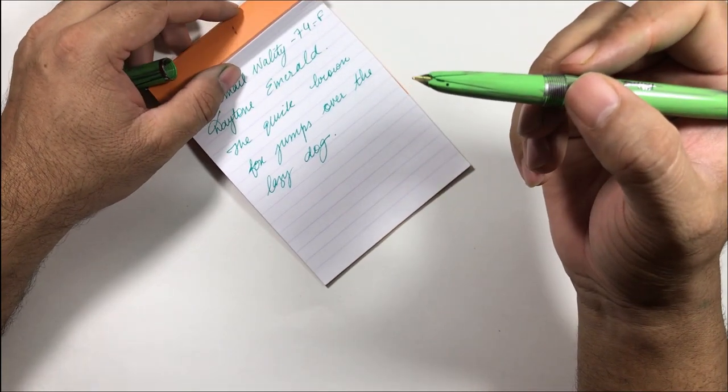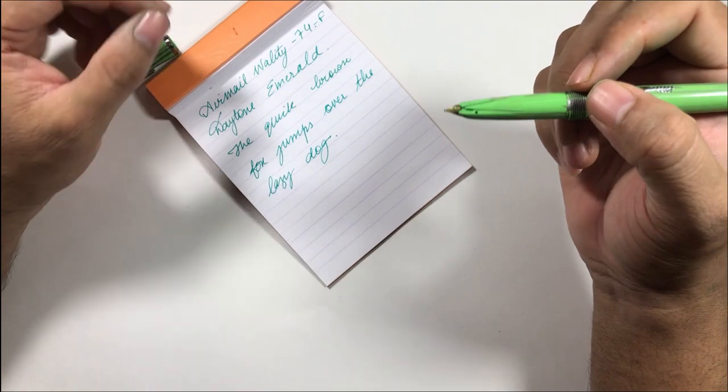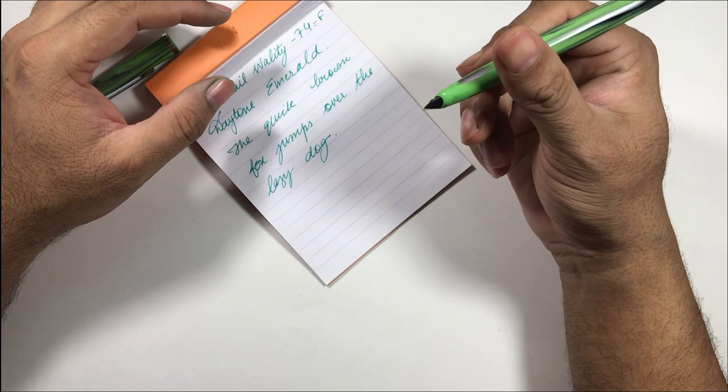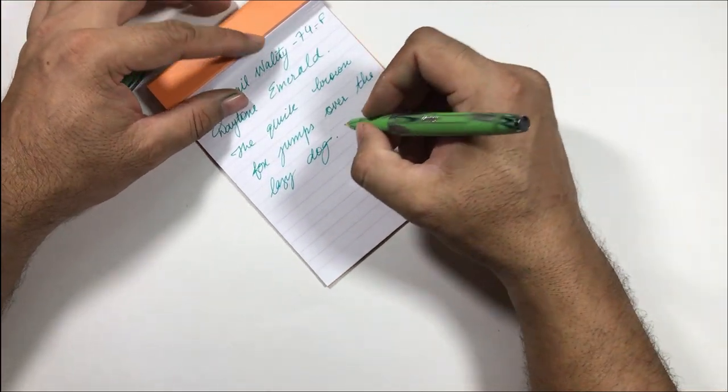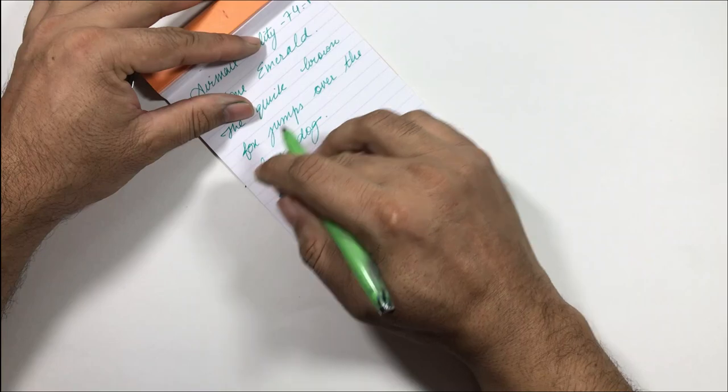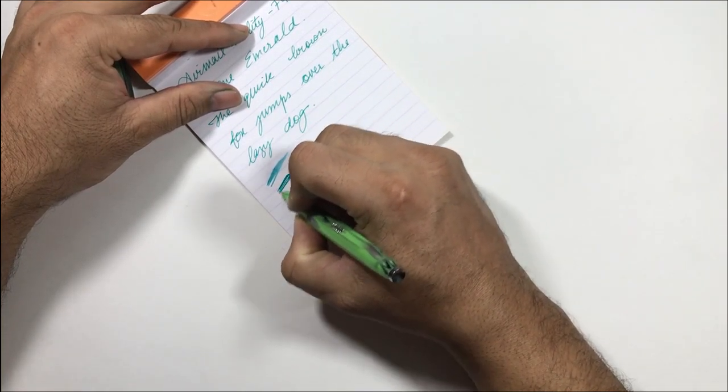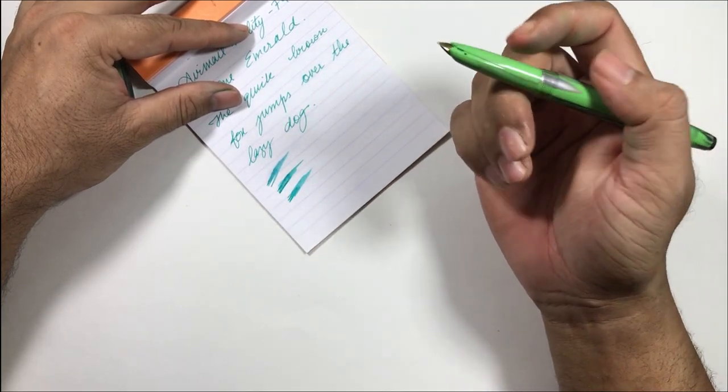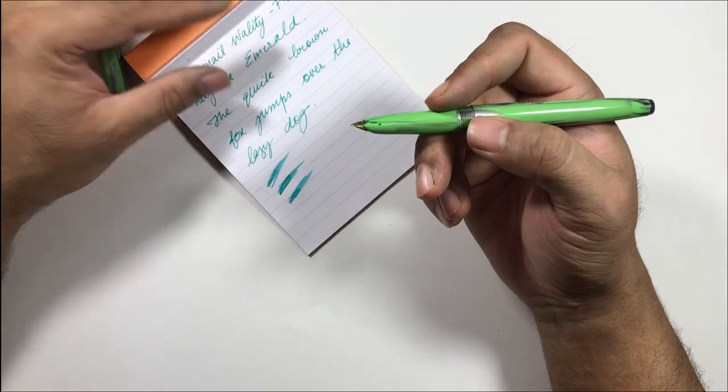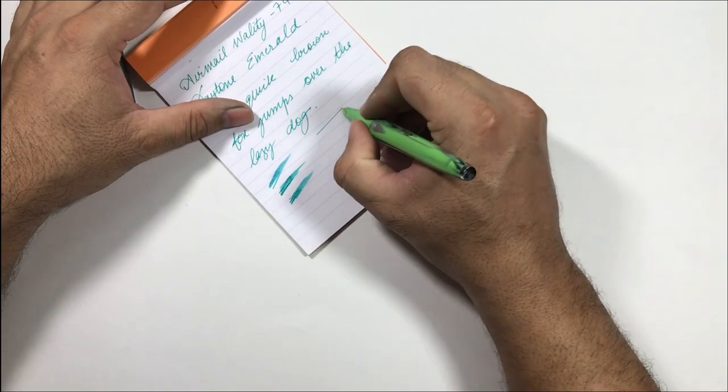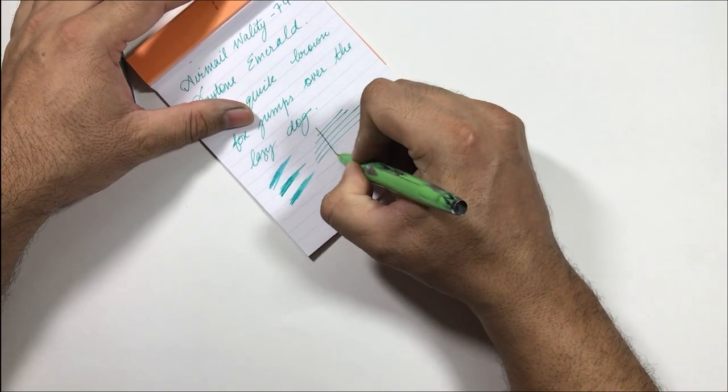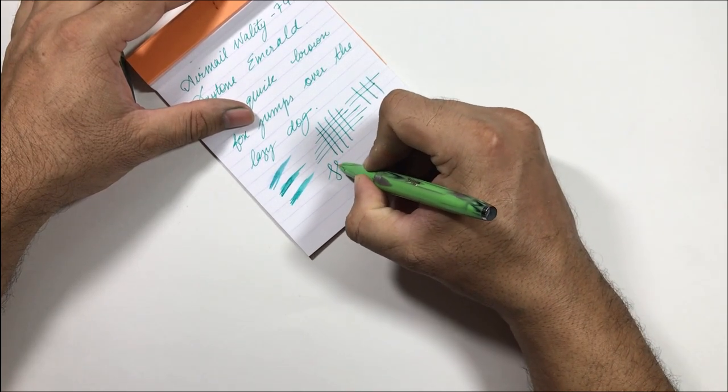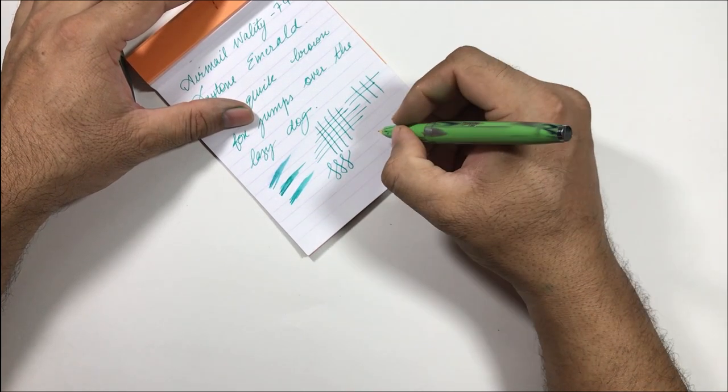This nib is fine so it is giving a little bit of feedback but it is not scratchy. It is not very wet, it is giving a decent amount of ink, but being a fine nib it is expected to be a little on the drier side. It does not have much line variation but you can squeeze some line variation if you push, but it is not recommended to push these steel nibs too hard.